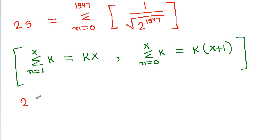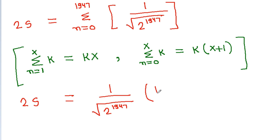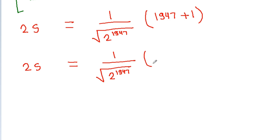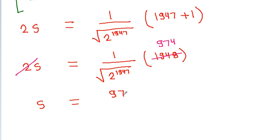Therefore, 2S equals 1 divided by the square root of 2^1947 times (1947 plus 1), which gives 2S equals 1948 divided by the square root of 2^1947.